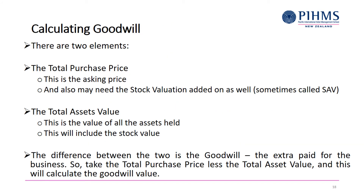There are two elements here. The total purchase price is made up of two parts. You've got the asking price — that might be $200,000. And then we also need to add on any stock valuation if it says so. It might say $200,000 plus stock, so we need to add that on because you have to pay it. That is part of the total purchase price of this business — that's how much money you have to pay out if you want to buy this business.